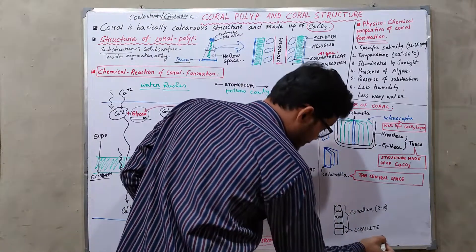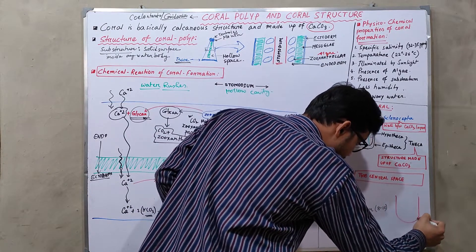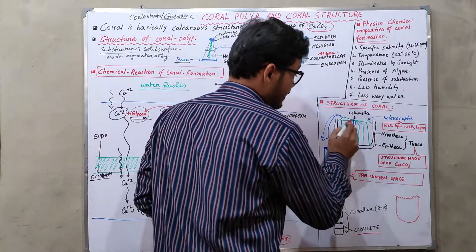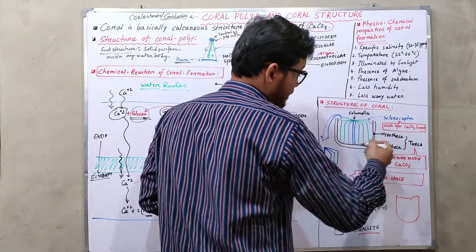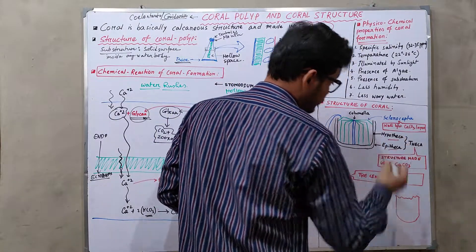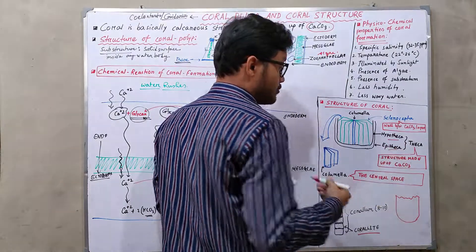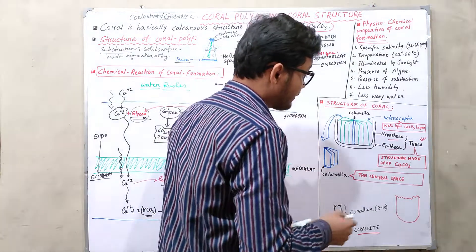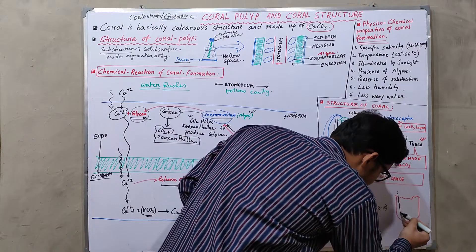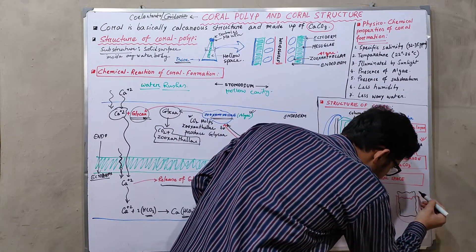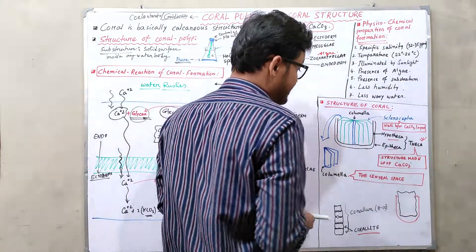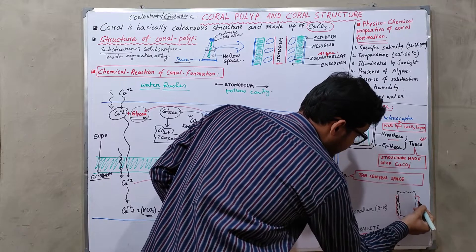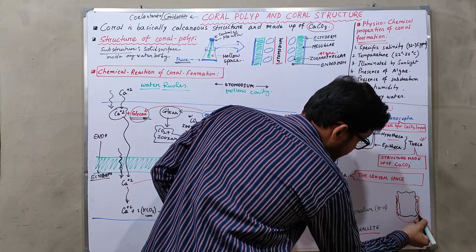As this calcium carbonate is deposited, a structure known as a coralite is produced — a cup-like structure. Coral-forming polyps create specific structures known as epitheca and hypotheca, which together form the theca. The theca is a structure made up of calcium carbonate that houses the coral-forming polyps.